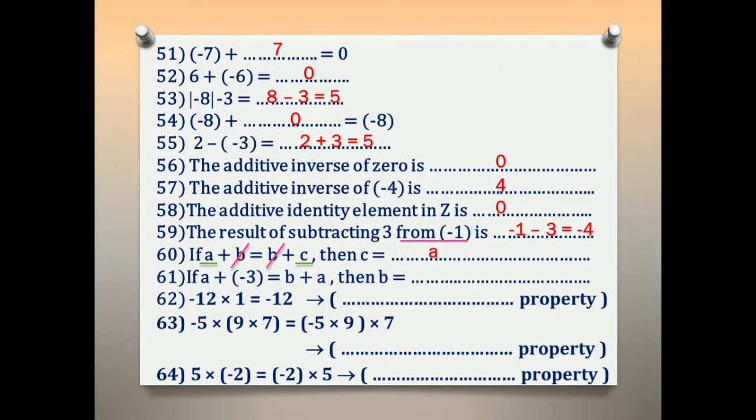Number 61: if A plus negative 3 equals B plus A, then B equals what? Cancel A with A. So B equals negative 3.